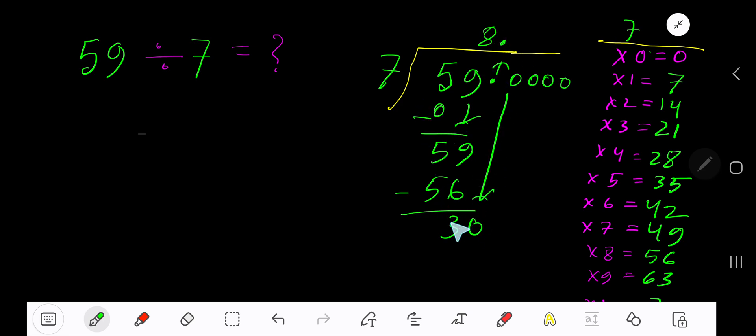7 goes into 30 how many times? 5 times is 35 which is greater, so 4 times. 4 times 7 is 28. Subtract 2. Bring down another zero. 7 goes into 20 how many times? 3 times is 21 which is greater, so we have to take 2 times.